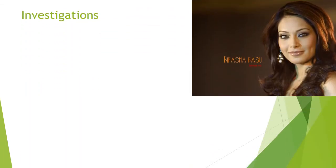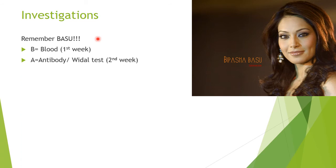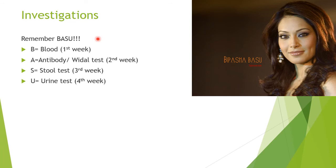For investigations, you can remember the mnemonic BASU. B for blood — in the first week we do blood culture. A for antibody — in the second week we do an antibody test or Widal test. S for stool test — in the third week. U for urine test — in the fourth week. So: BASU.